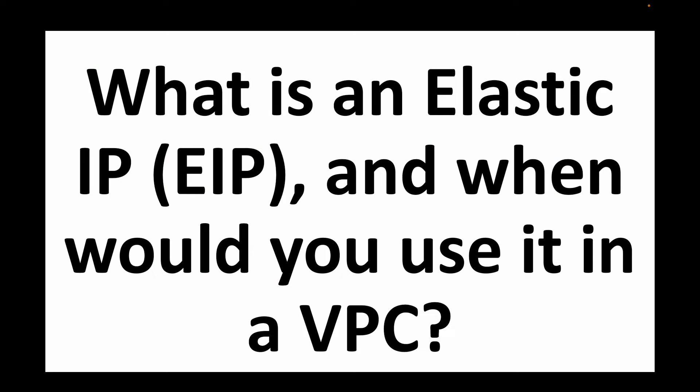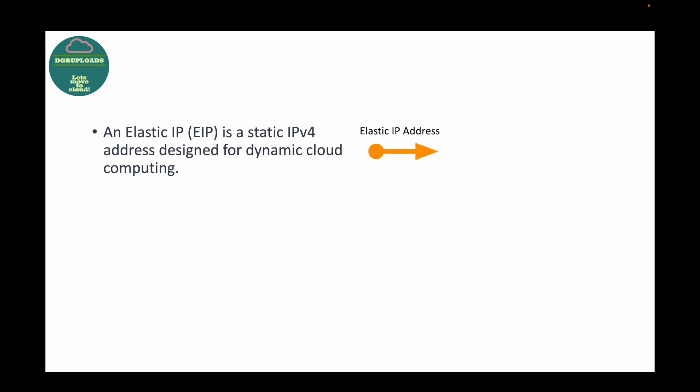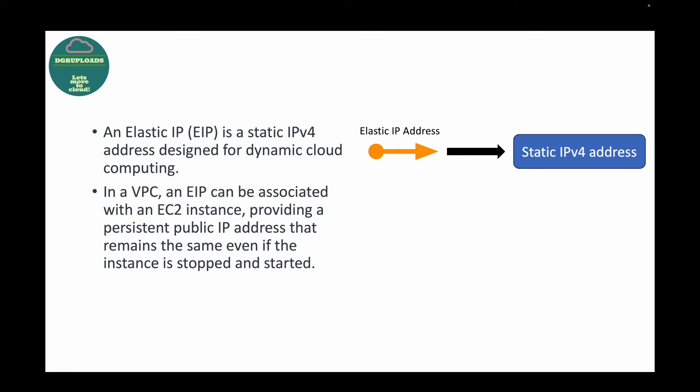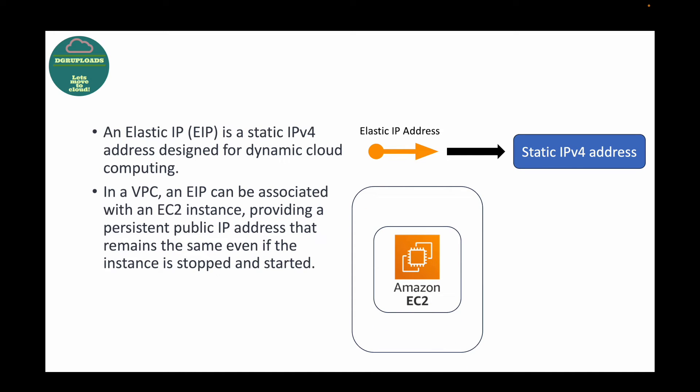The next question is: what is an Elastic IP address and when would you use it in a VPC? Elastic IP is mainly used when you want to have a static IPv4 address for dynamic cloud computing. In a VPC, an Elastic IP can be associated with an EC2 instance, providing a persistent public IP address that remains the same even if the instance is stopped or started. By default, when you launch an instance in a public subnet you get a public IP, but that IP is lost if you stop and restart the instance.